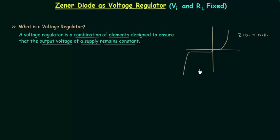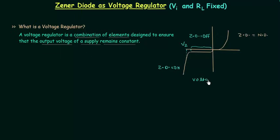If you want to use a Zener diode as a voltage regulator, you must reverse bias it and also achieve breakdown. In reverse bias we have two conditions: when there is no breakdown, the Zener diode is off, and when there is breakdown, the Zener diode is on. So it becomes important to apply a reverse bias potential greater than the Zener voltage VZ. The voltage across the Zener diode must be greater than or equal to VZ. This is the very important condition to use a Zener diode as a voltage regulator.